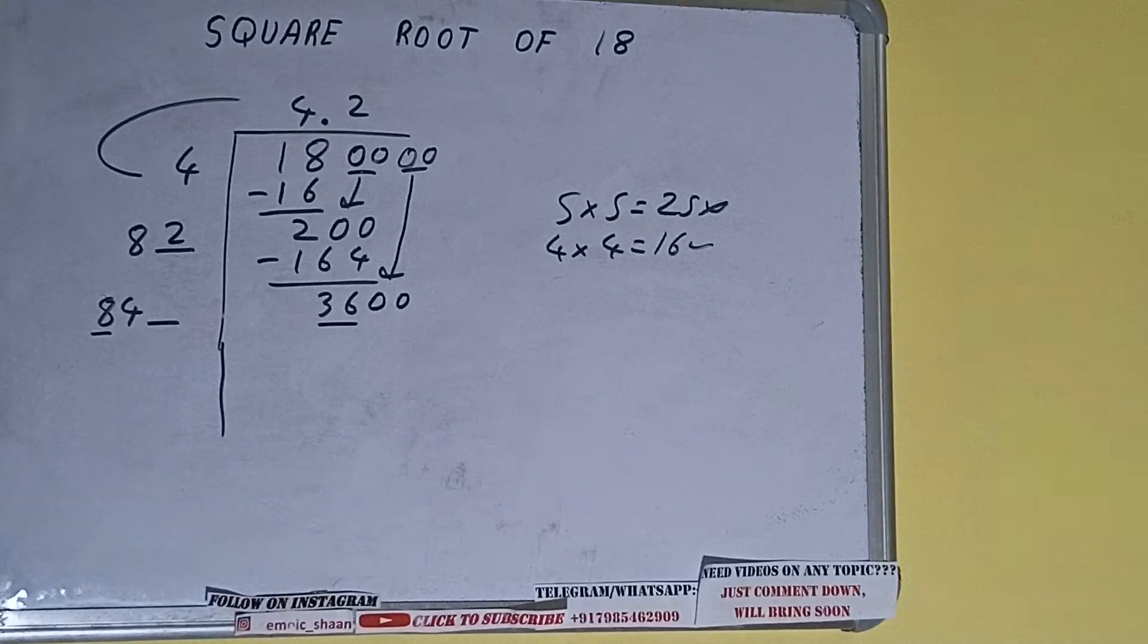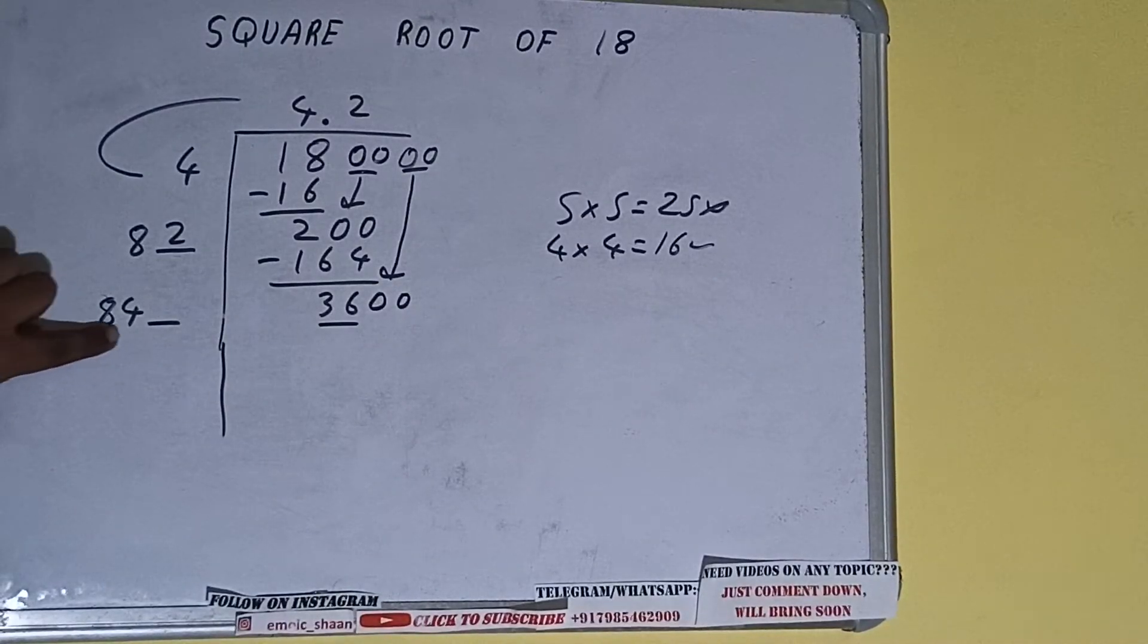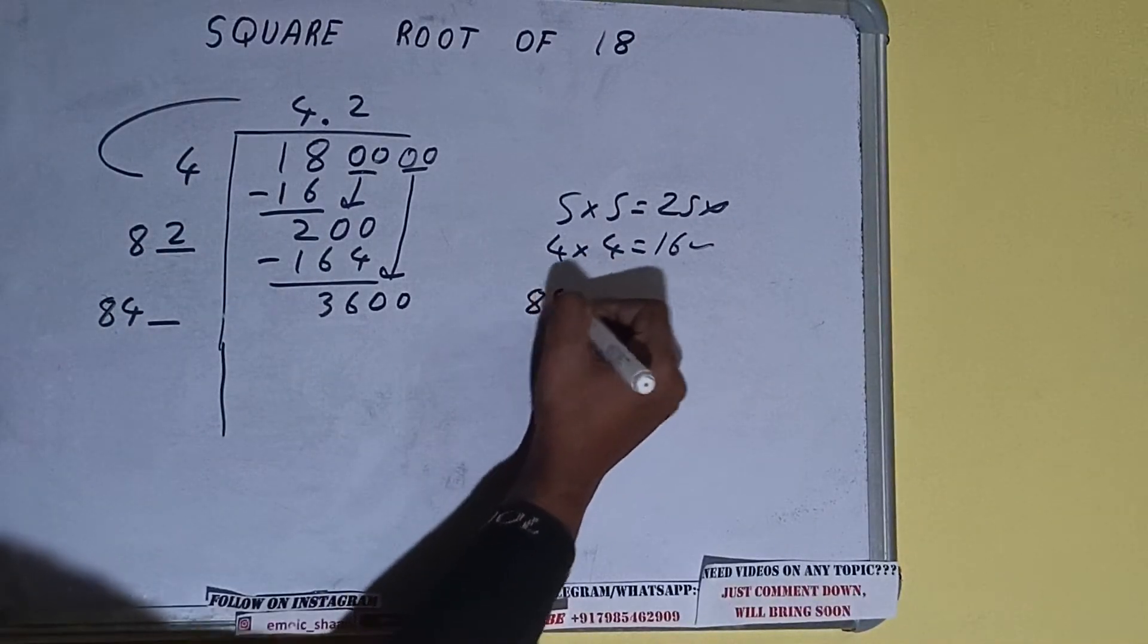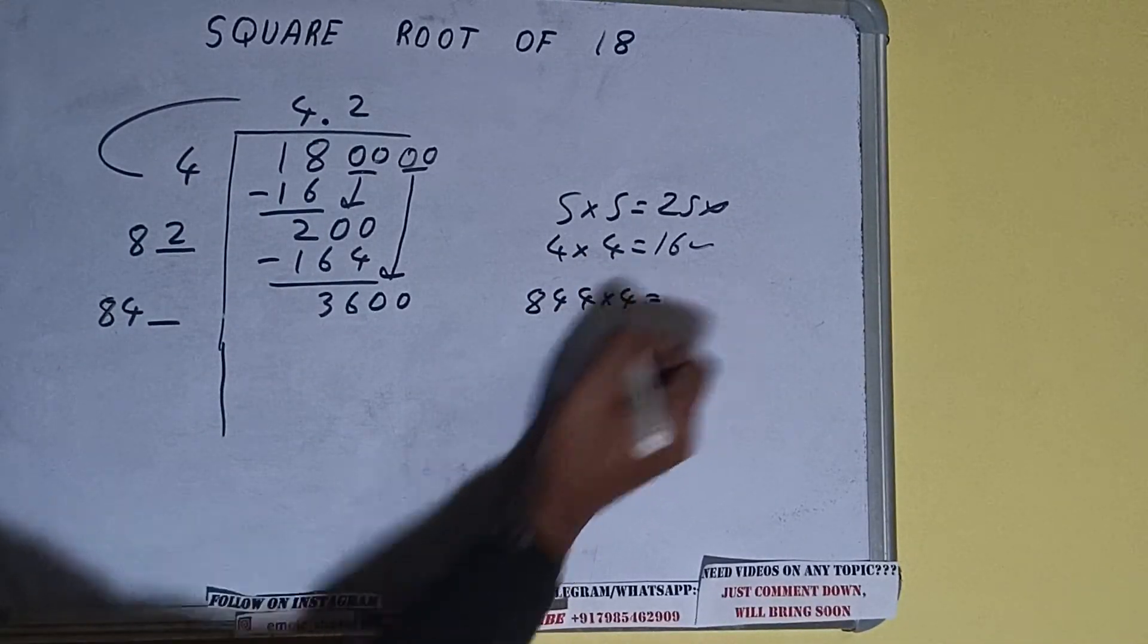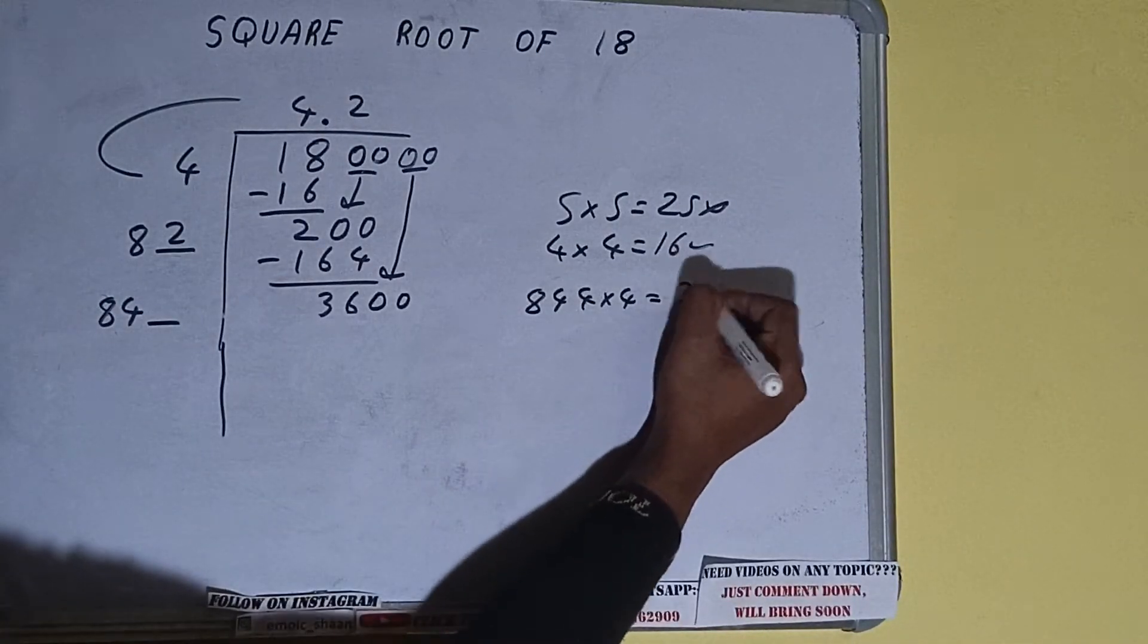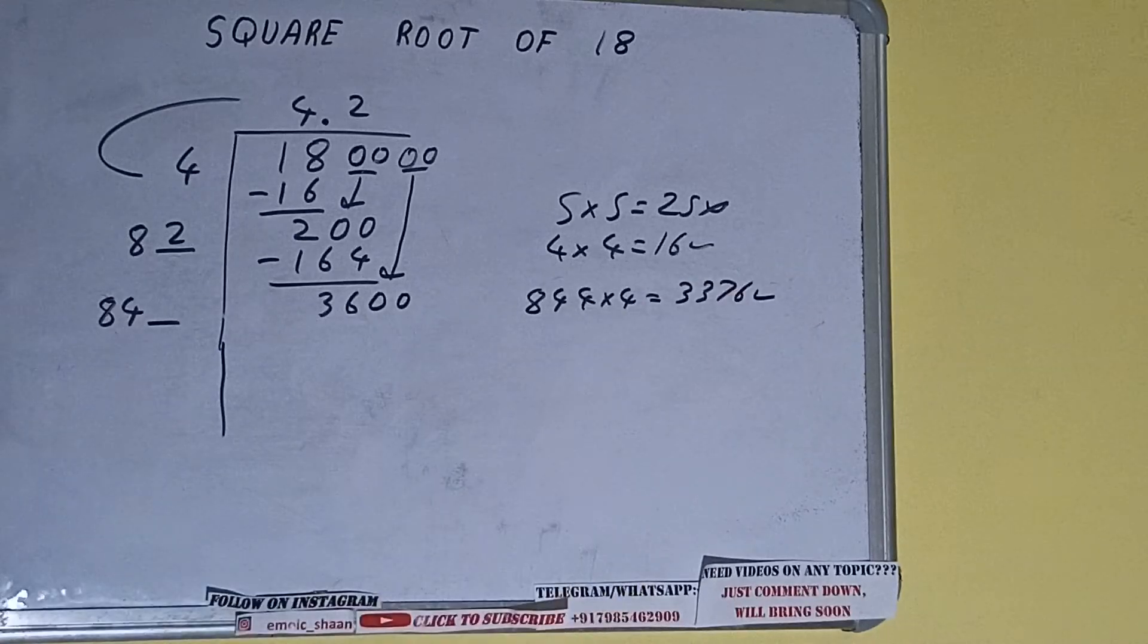Now we can compare this 8 with this 36. So 8 four times is 32, so we can try 4 times. 844 into 4 we can try, it will be 3376, which is good to take.